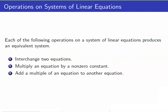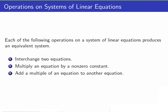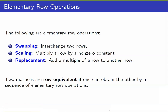Now, when we were solving systems of linear equations, here are the operations that produce an equivalent system. An equivalent system means they have the same solution. Number one, we can interchange two equations. Number two, we multiply an equation by a non-zero constant. Number three, we add a multiple of an equation to another equation — this third operation is what we use to eliminate a variable. Since we can write a system in matrix form, these operations give rise to what we call elementary row operations.